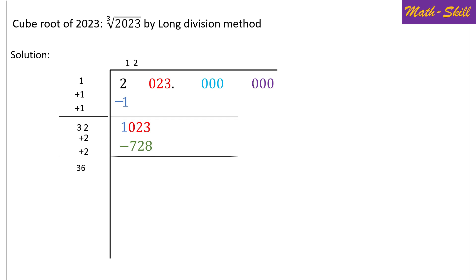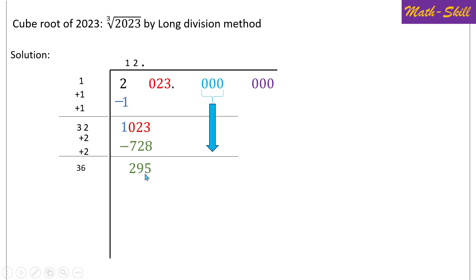Subtracting 728 from 1023 gives a remainder of 295. We add the latest quotient digit 2 twice to 32: 32 + 2 + 2 = 36. Even if we consider the next digit as 1, 361 × 1 would be more than 295, so we cannot proceed without a decimal point. We place the decimal point and bring down the next three zeros, making the new number 295000.